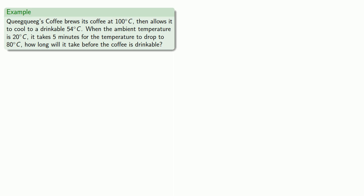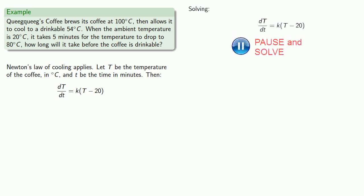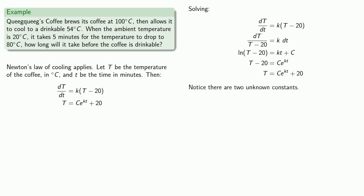So Newton's Law of Cooling applies. Let T be the temperature of the coffee in degrees Celsius and little t be the time in minutes. Then Newton's Law of Cooling says the rate of change of the temperature is proportional to the difference in temperature between the coffee and the ambient environment, which in this case is 20 degrees Celsius. So that's our differential equation. We'll solve this differential equation producing our function of temperature where there are two unknown constants, C and k.